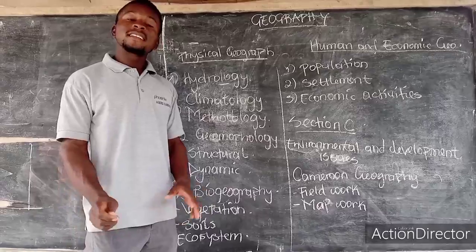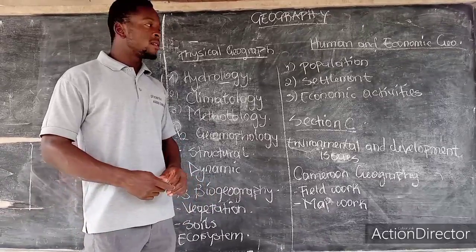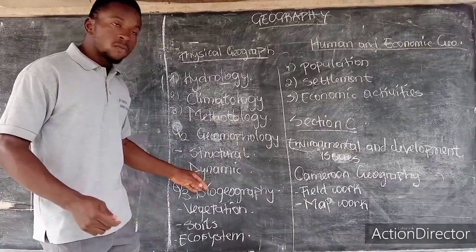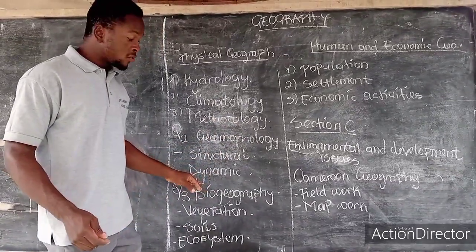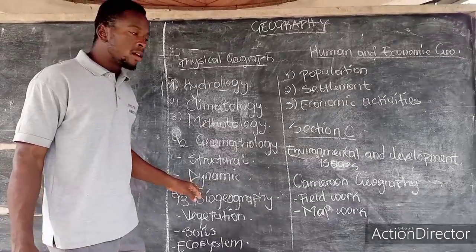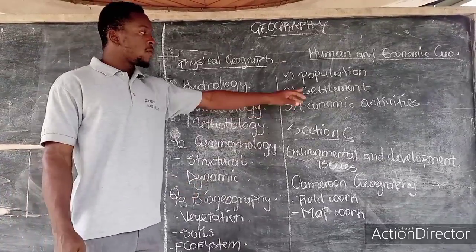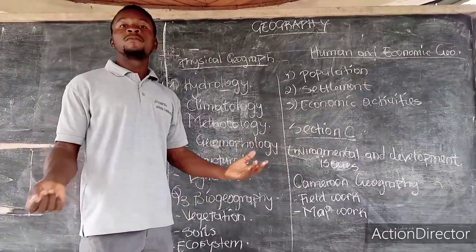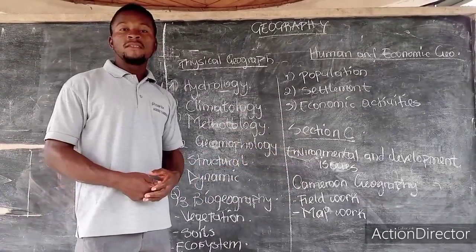So if I were you, I would just revise one or two topics from each branch — one from physical geography, one from human and economic, one from environmental — and prepare for Advanced Level 2021 that way.